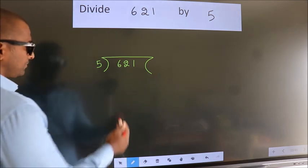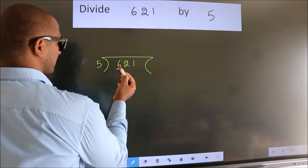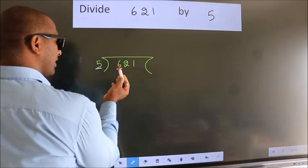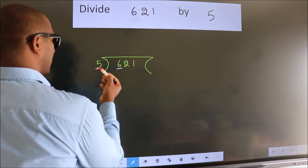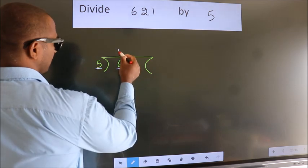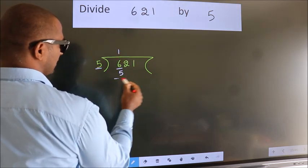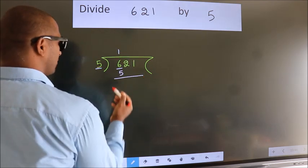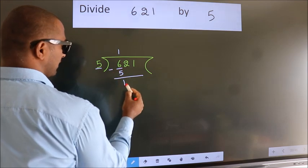Next. Here we have 6, here 5. A number close to 6 in 5 table is 5 once 5. Now we should subtract. We get 1.